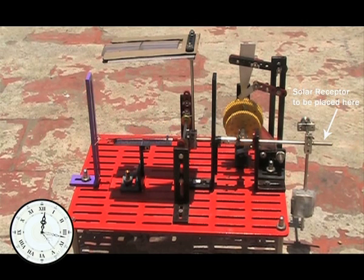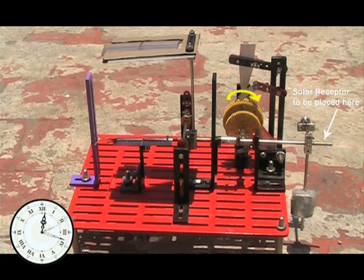In the absence of any heating, the SMA spring would start to cool and elongate due to the pull exerted by the weight attached to wheel C.